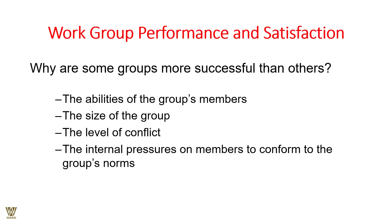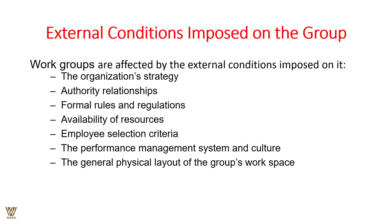Why are some groups much more successful than others? It is because of the abilities of group members, the size of the group, the level of conflict, and the internal pressures on members to conform to group norms. External conditions imposed on groups include organizational strategies, authority relationships, formal rules and regulations, availability of resources, employee selection criteria, the performance management system, culture, and the general physical layout of the workspace.